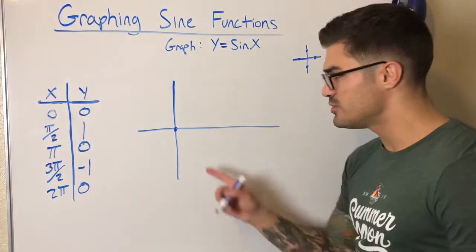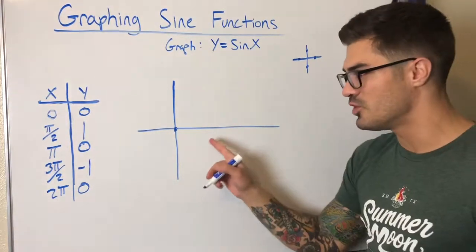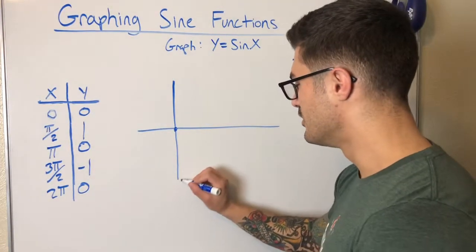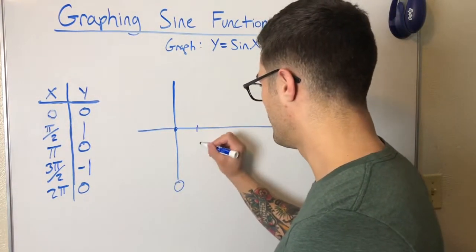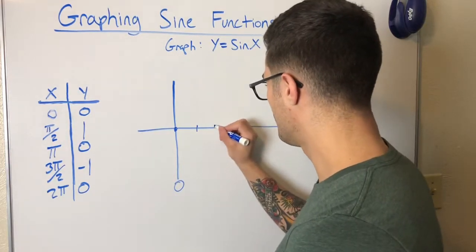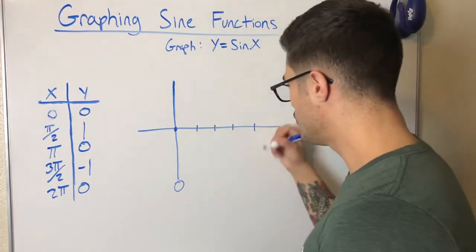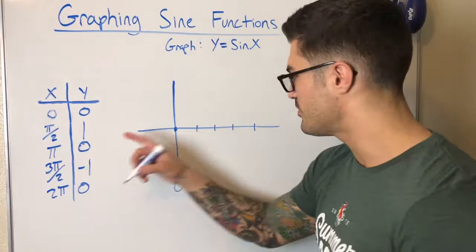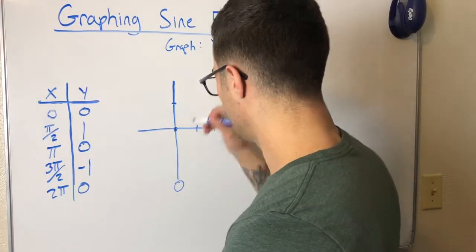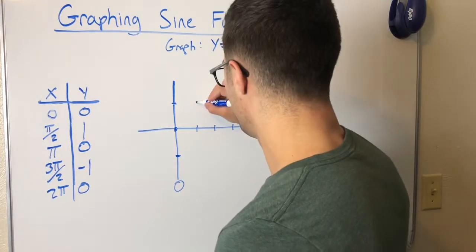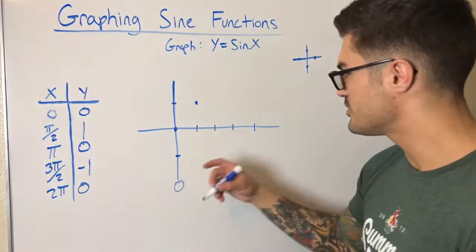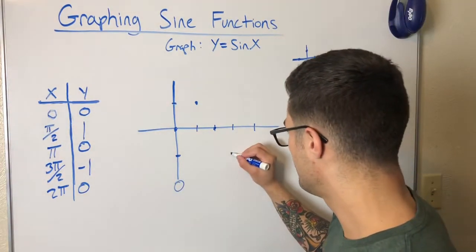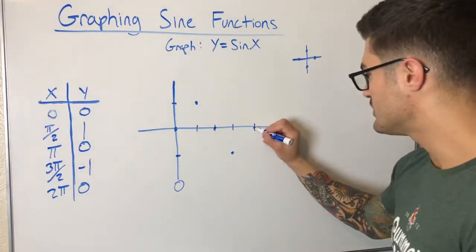I'll label my graph in increments of pi over two rather than 1, 2, 3. So along the x-axis I have zero, pi over two, pi, three pi over two, and two pi. Now I plot the points: at pi over two y is one, so one unit up; at pi y is zero; at three pi over two y is negative one; and back up to zero at two pi.